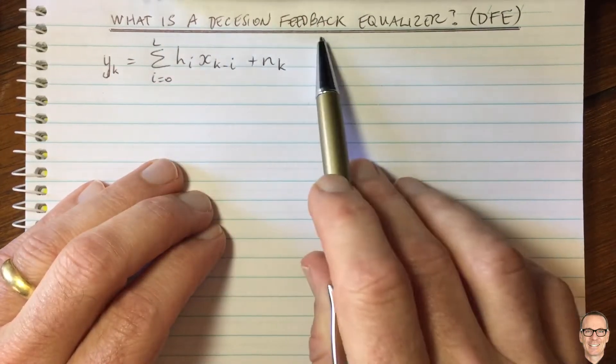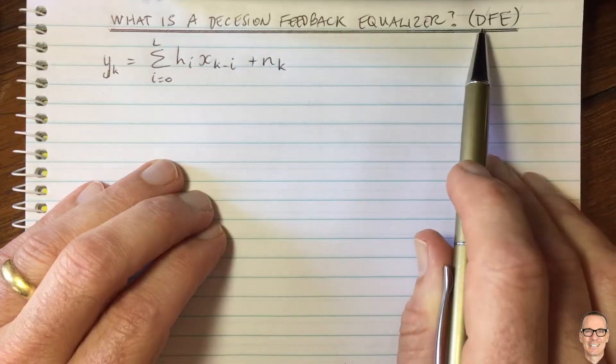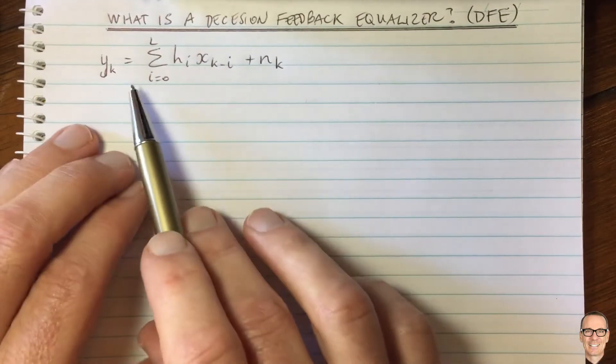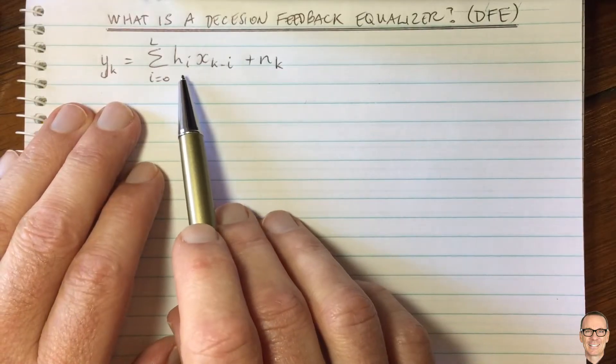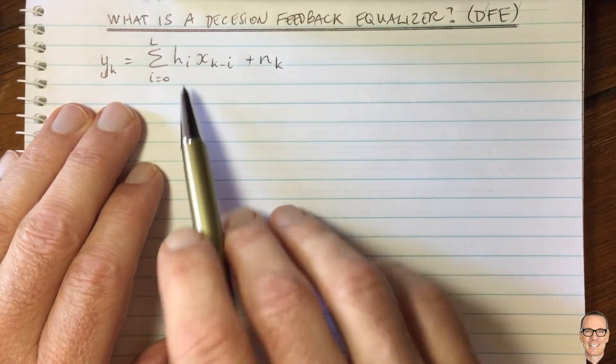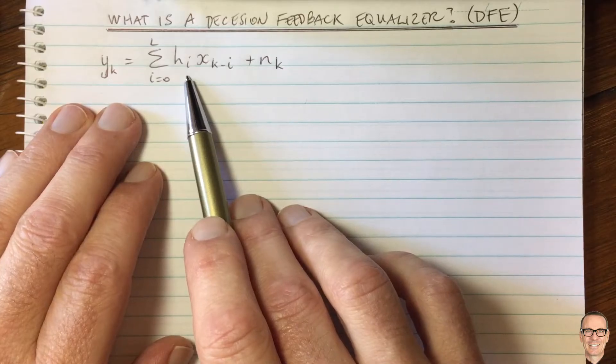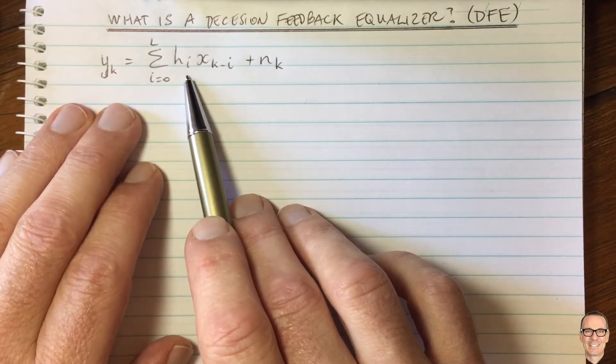So what is a decision feedback equalizer or a DFE? Well here's the equation for a channel with inter-symbol interference, ISI. And for more information on this there's a video on the channel which you can find in the link below this video.